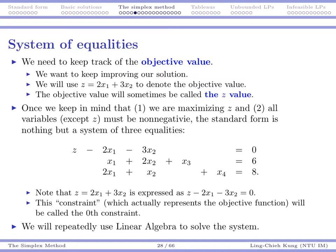Once we keep in mind that we are maximizing Z and all the variables except Z must be non-negative, we may actually replace that objective function by another equality constraint like this. We are going to say that Z minus 2X1 minus 3X2 should be 0. And that's exactly our definition.